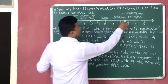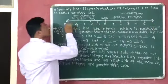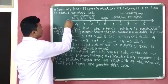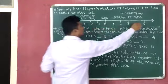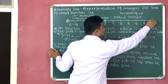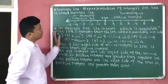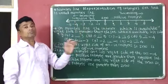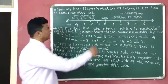This is the figure of the number line. Arrows are available on both sides of the number line — this is the first arrow and this is the second arrow.